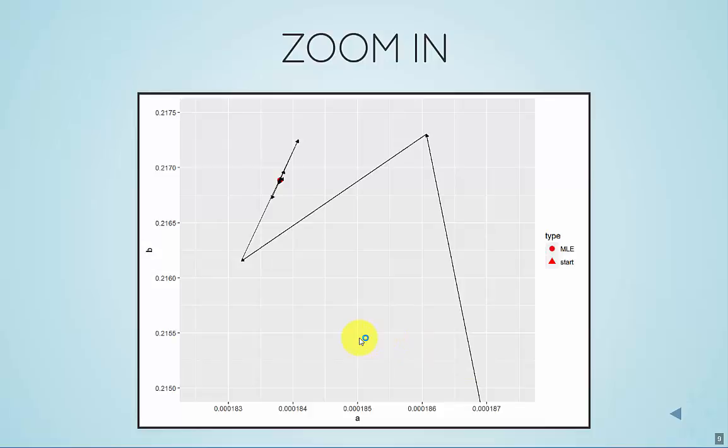So that's maximum likelihood estimation for nonlinear models. Almost always when you run into convergence problems, it's because the surface of the likelihood is not nicely shaped.